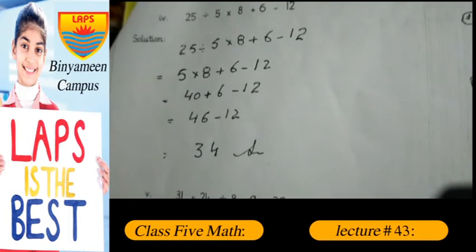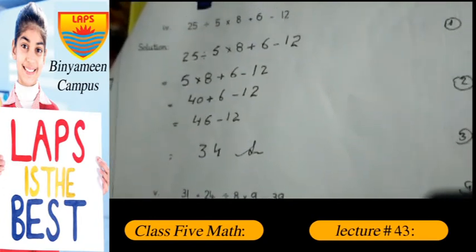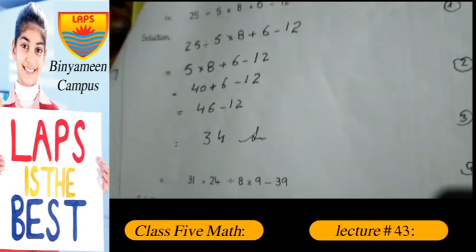Again, 25 divided by 5 we get 5, multiplied by 8 we get 40, then add 6 we get 46, then we subtract 12 we get 34.